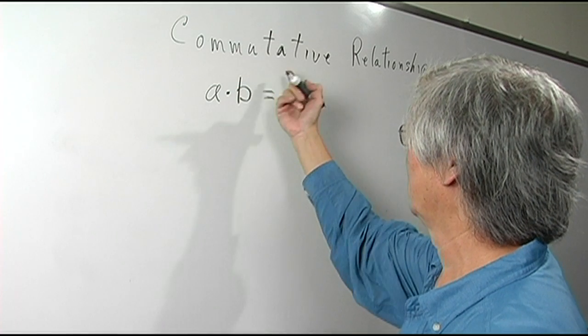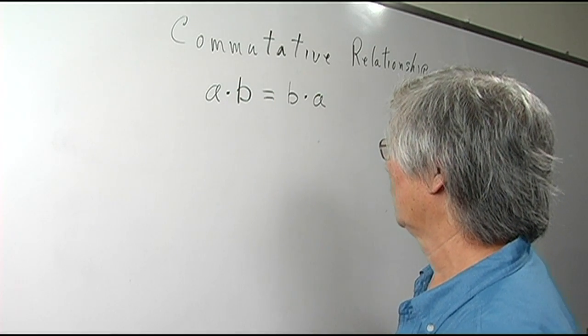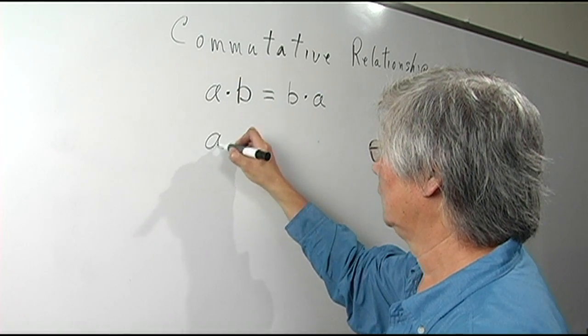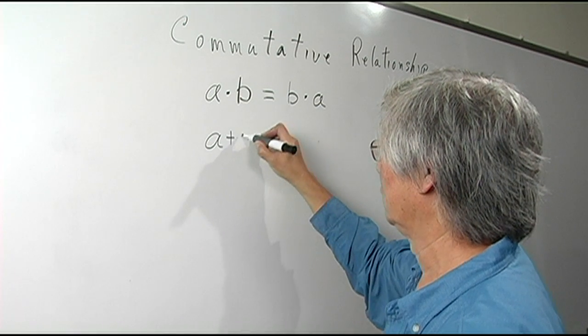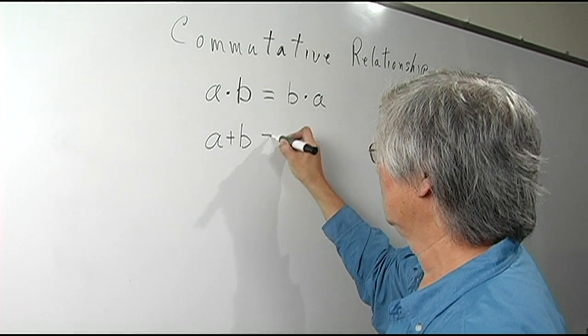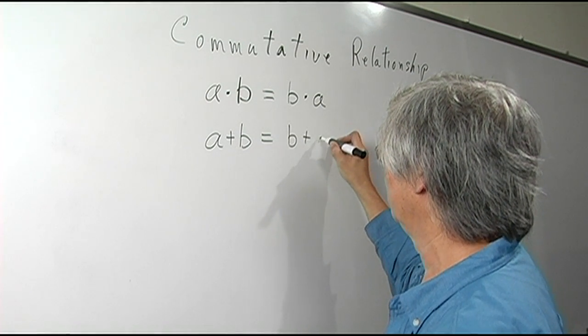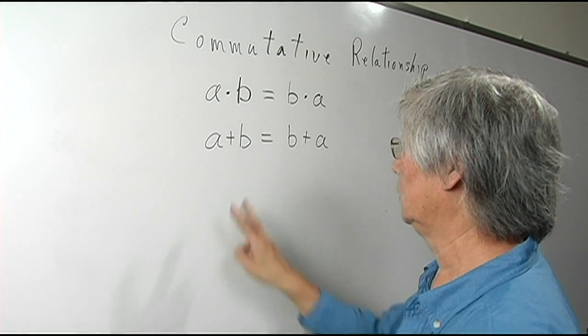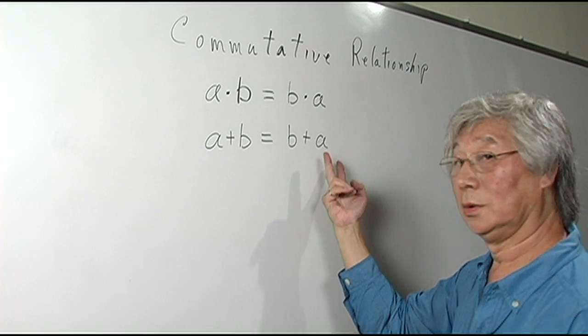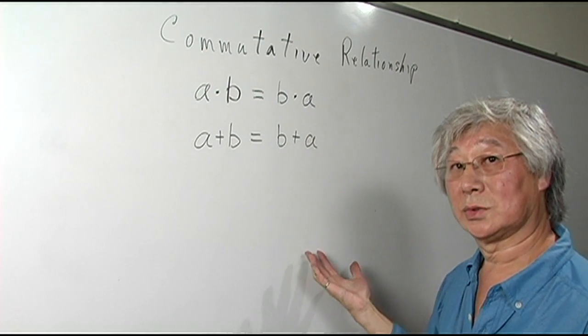Now, another way to talk about commutative relationship is the additive property. A plus B is also equal to B plus A. And once again, the order is not important because the results are the same.